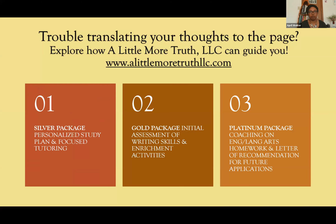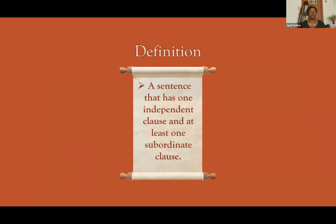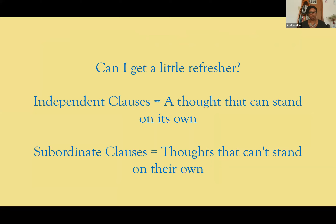Complex sentences — let's talk about what a complex sentence is. It is a sentence that has one independent clause and at least one subordinate clause. An independent clause is a thought that can stand on its own, and subordinate clauses are thoughts that can't stand on their own. A subordinate clause is akin to a sentence fragment, and an independent clause is a complete sentence.